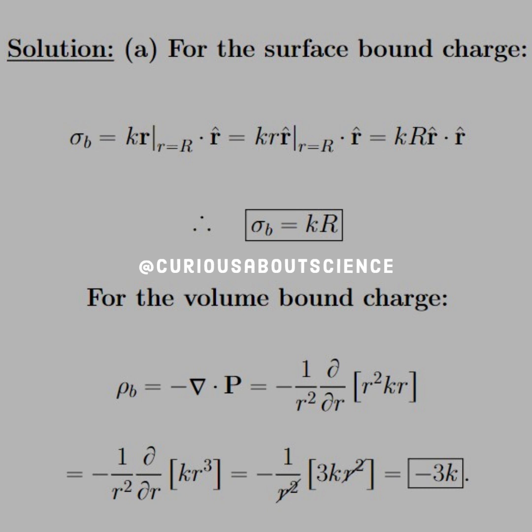From there, we have to realize that we're at the surface. So we need, for the magnitude of r, we need to put in capital R because that's the radius of the sphere at the surface. Then we're just left with the dot product of the unit vectors, which go to 1. Therefore, the surface bound charge, sigma b, is just equal to kR.